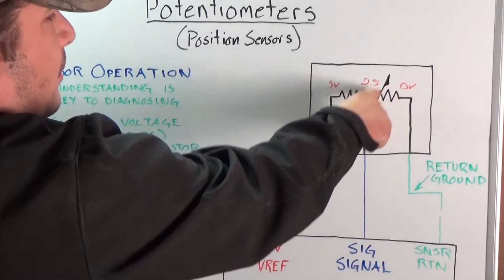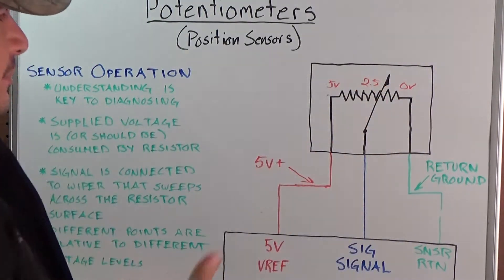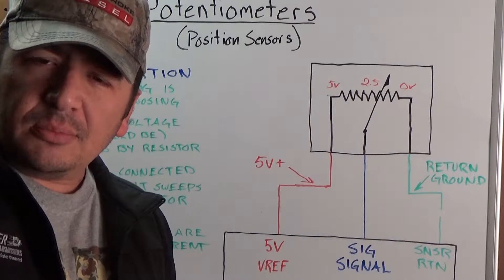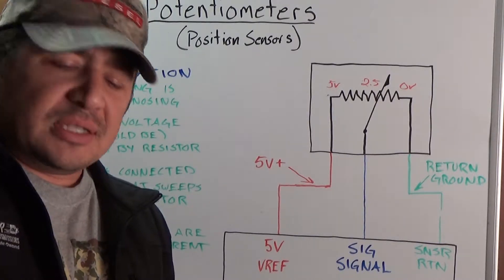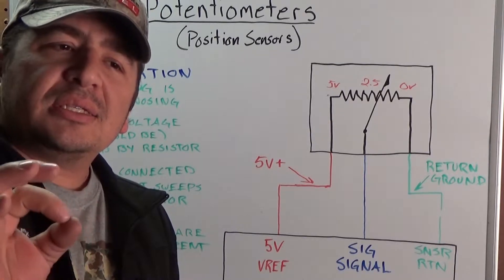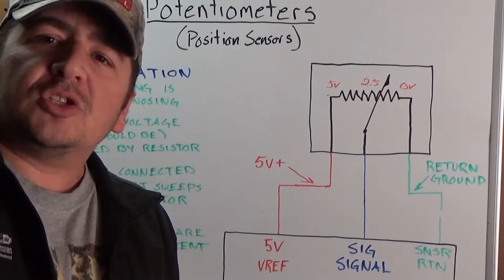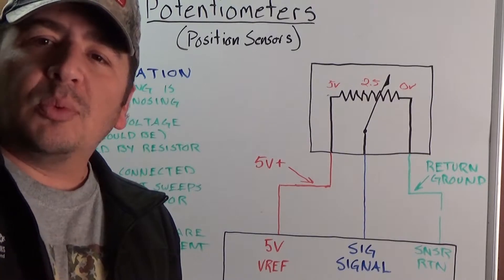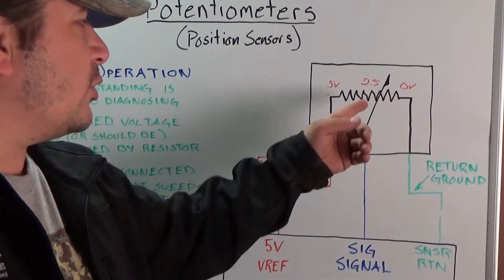This wiper arm and signal wire is not a complete circuit, per se. It's not something that has a power and a ground and a load. It is essentially a voltmeter lead. It doesn't consume voltage. It just looks at what the voltage potential is wherever it's touching.